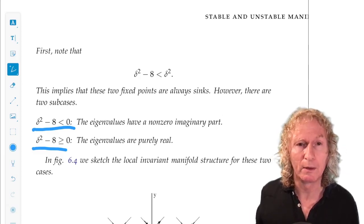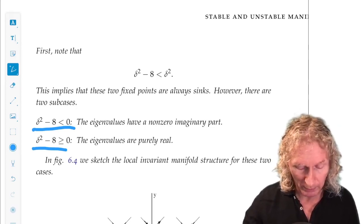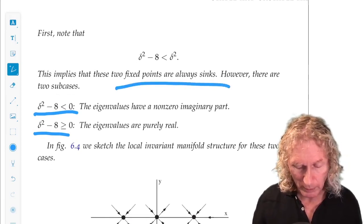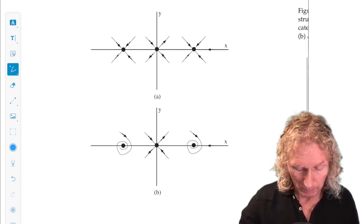We know what that means. It means that we have some spiraling around the equilibrium points as we approach them, because these two equilibrium points are always sinks, minus delta over two, minus delta over two.